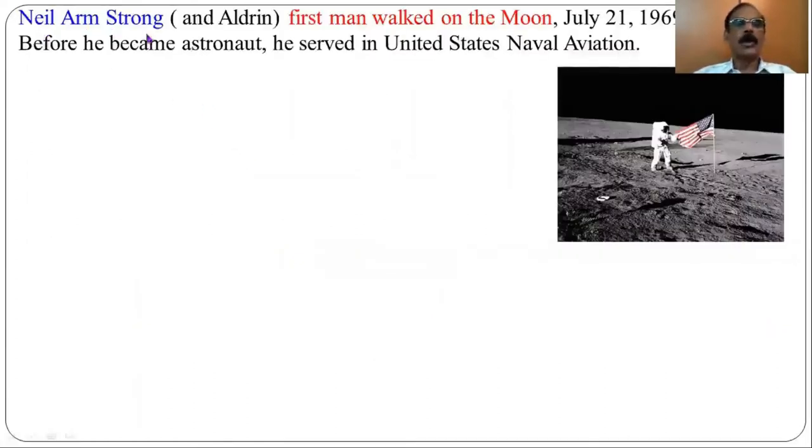Neil Armstrong and Aldrin went to the moon, but Neil Armstrong, the first man walked on the moon in July 21, 1969, United States of America, before he became astronaut. He served in United States naval aviation.